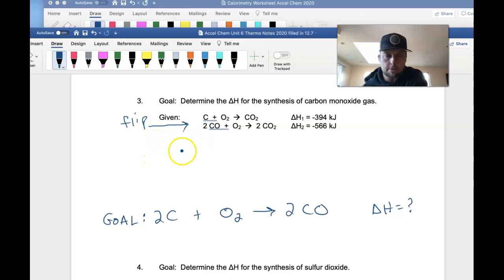You're going to flip this, and we're going to write 2CO2 yields, and I like to line up the arrows in the same place, 2CO plus O2. And remember, whatever we do to the reaction, we also do to the delta H value. So now delta H is not going to be negative 566. Delta H for this one is now going to be positive 566, because we flipped the direction of the reaction.